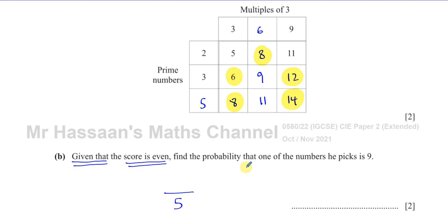It asks to find the probability that one of the numbers he picks is 9. There are two possibilities where he's picked a 9 and the score is even, out of 5 even scores. So that's 2 out of 5, and that's the answer to part B.